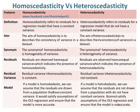Whereas, the aim of heteroscedasticity is to describe the inconsistency of variance in a data set.